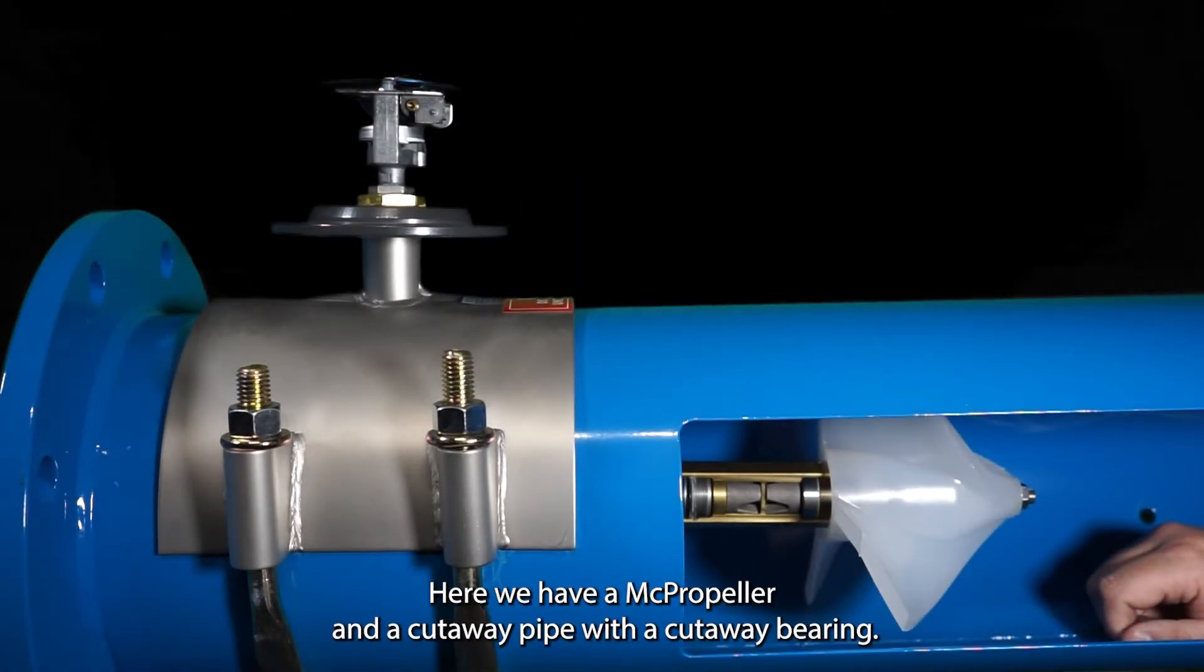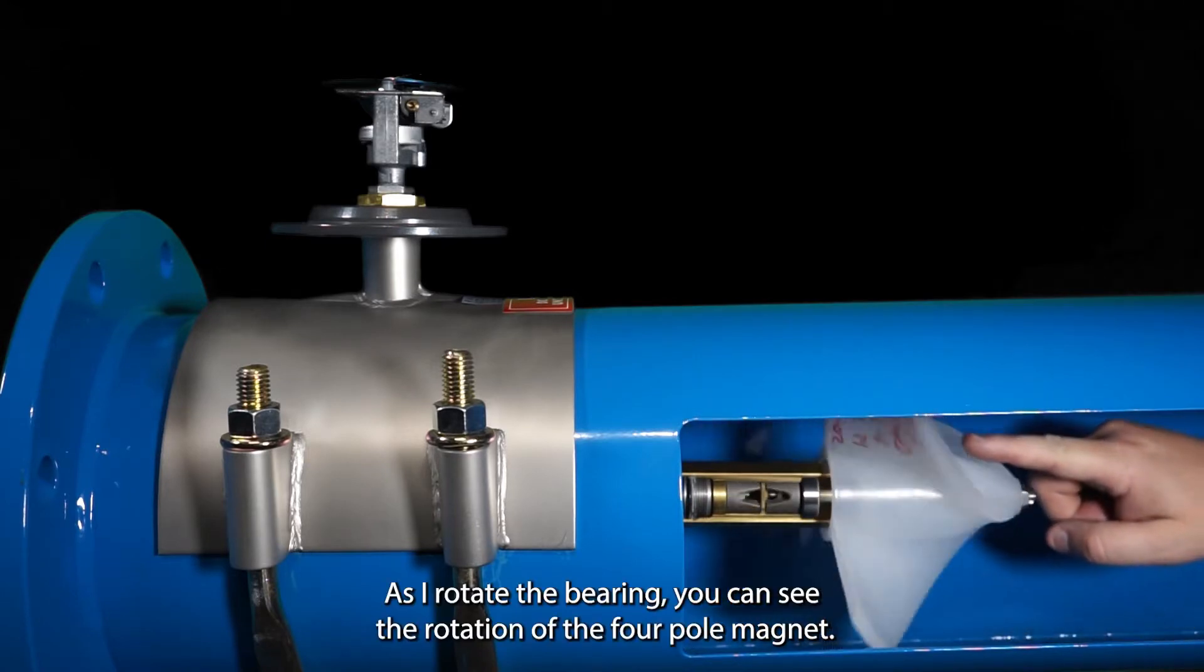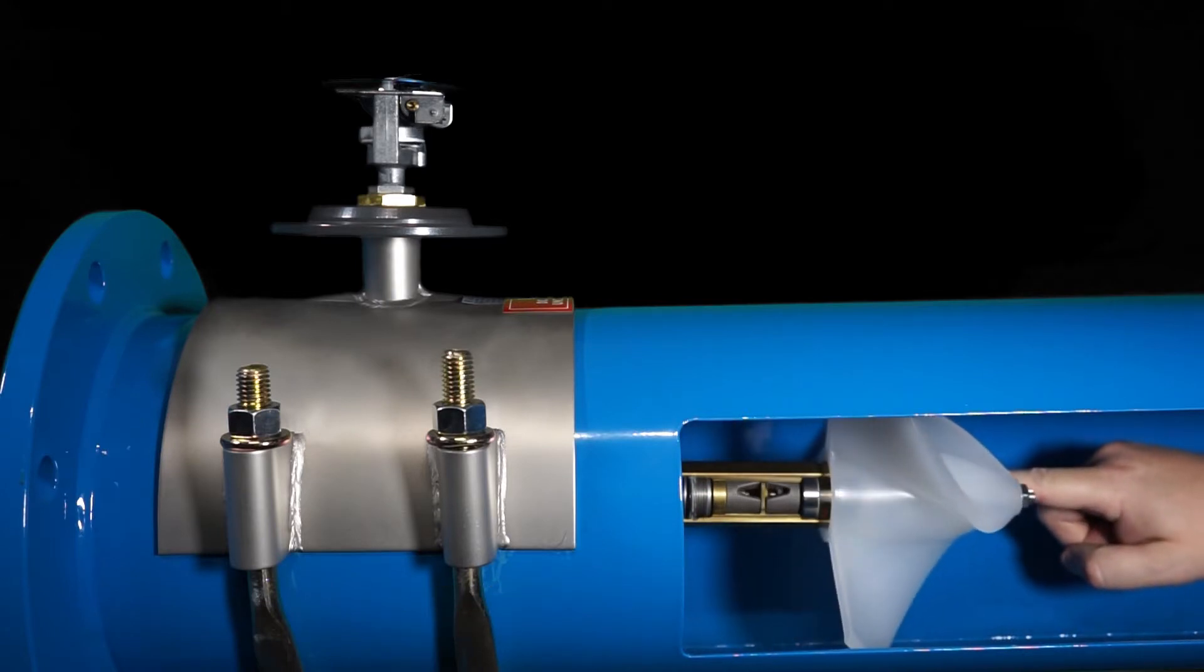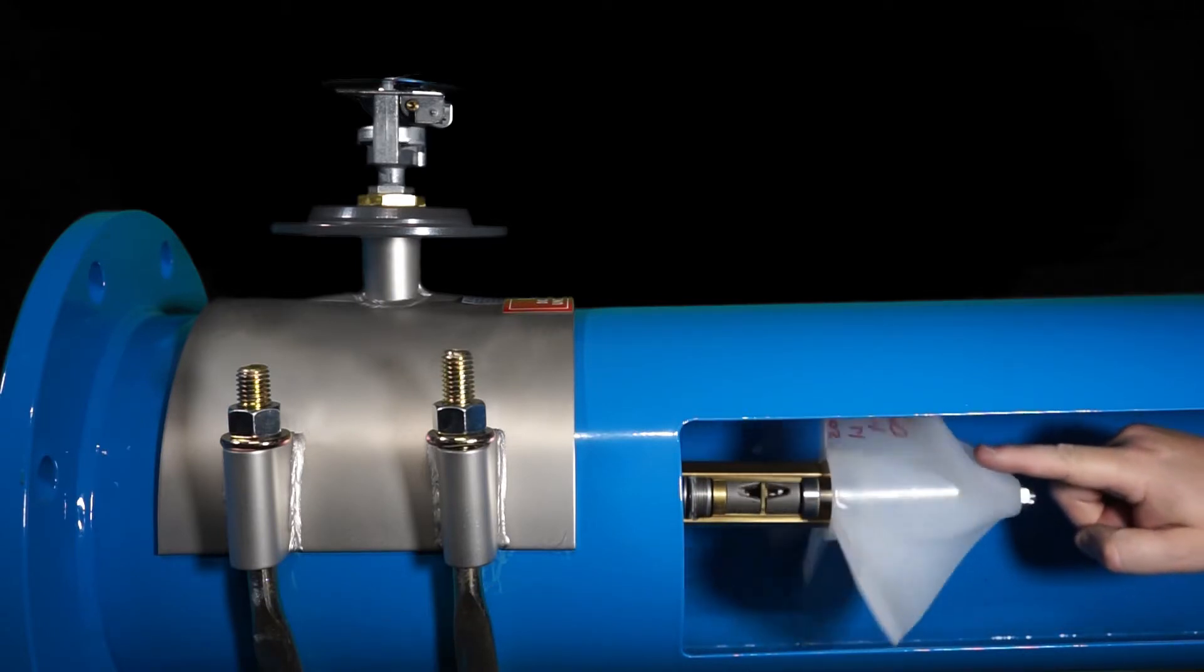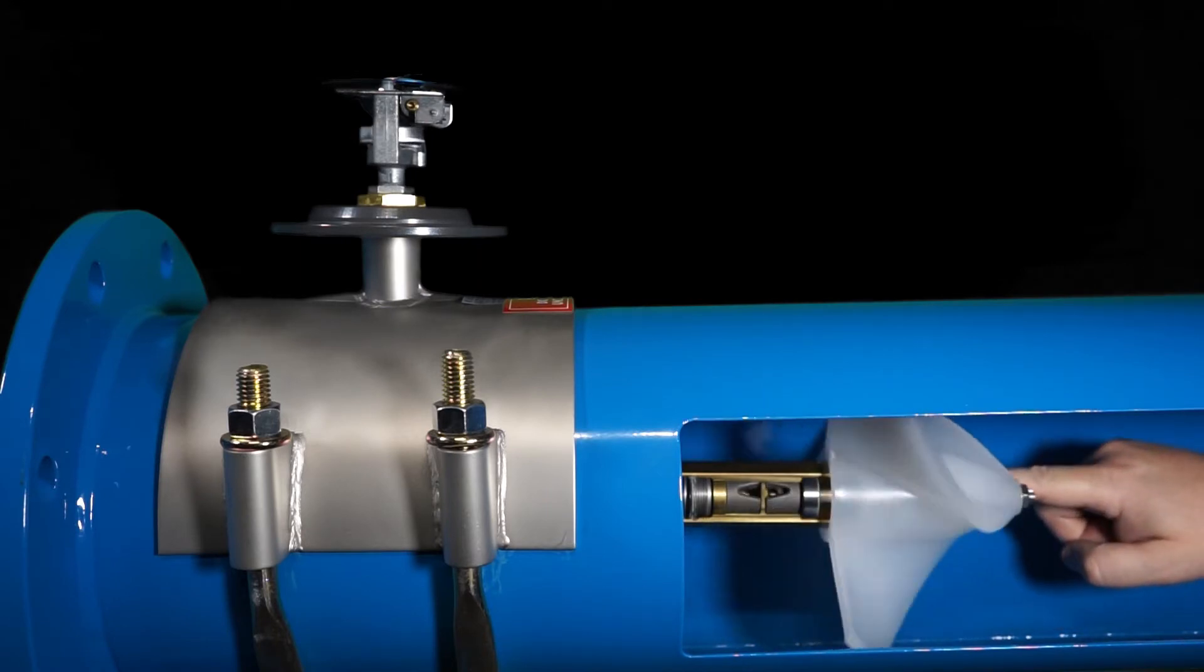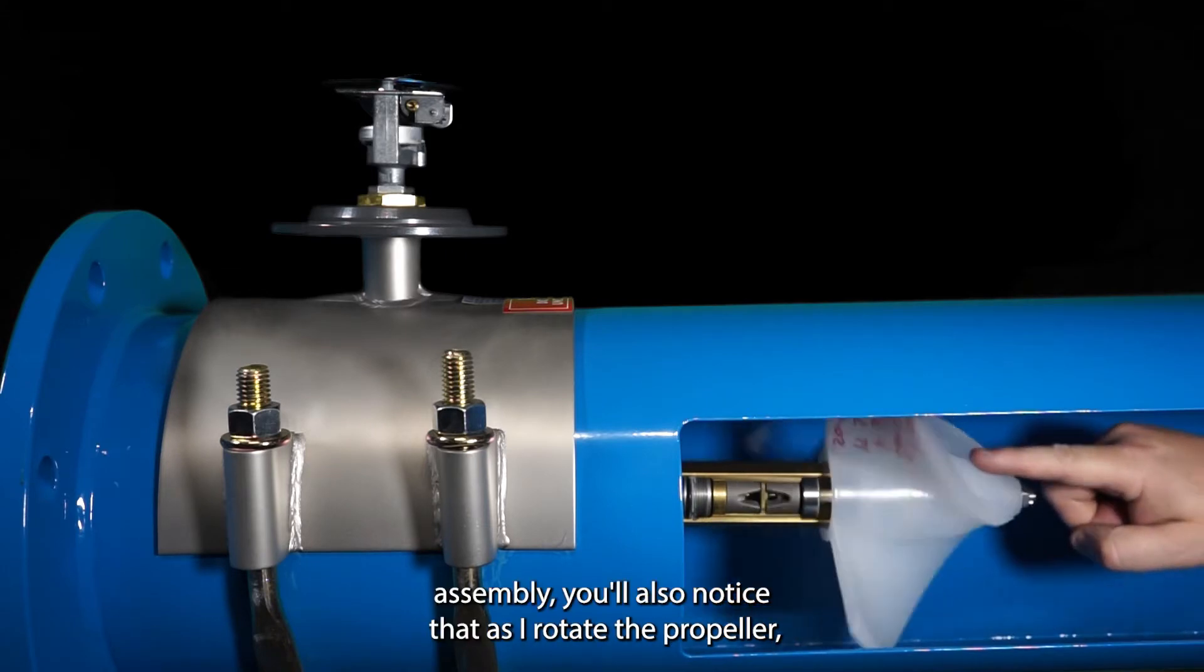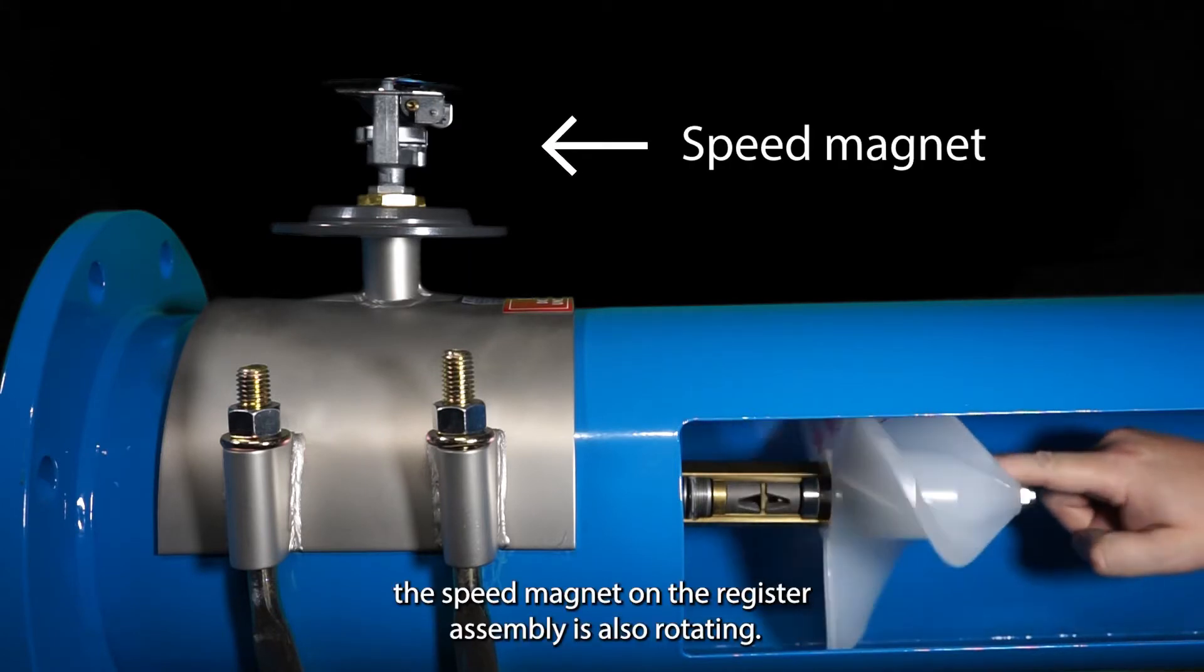Here we have a MC propeller in a cutaway pipe with a cutaway bearing so we can see the internals of the bearing. As I rotate the bearing you can see the rotation of the four pole magnet. Up at the register assembly you'll also notice that as I rotate the propeller the speed magnet on the register assembly is also rotating.